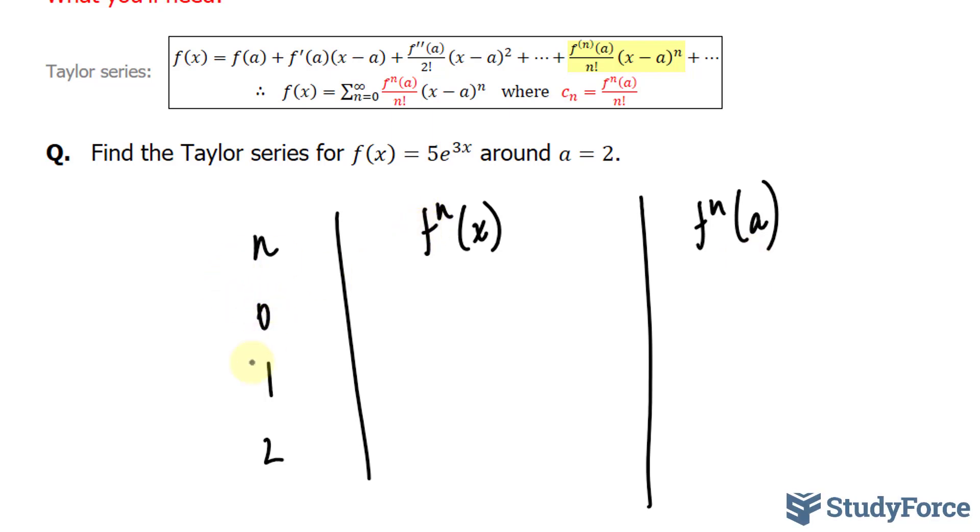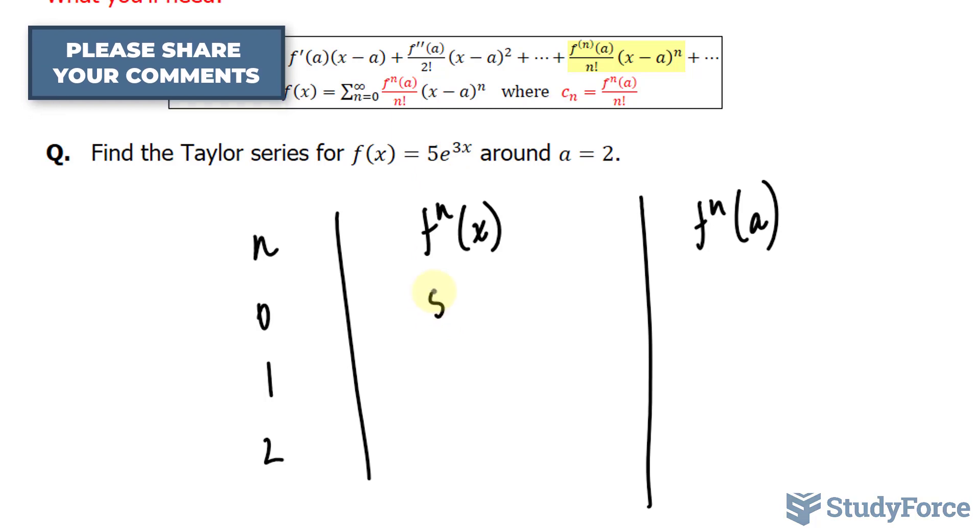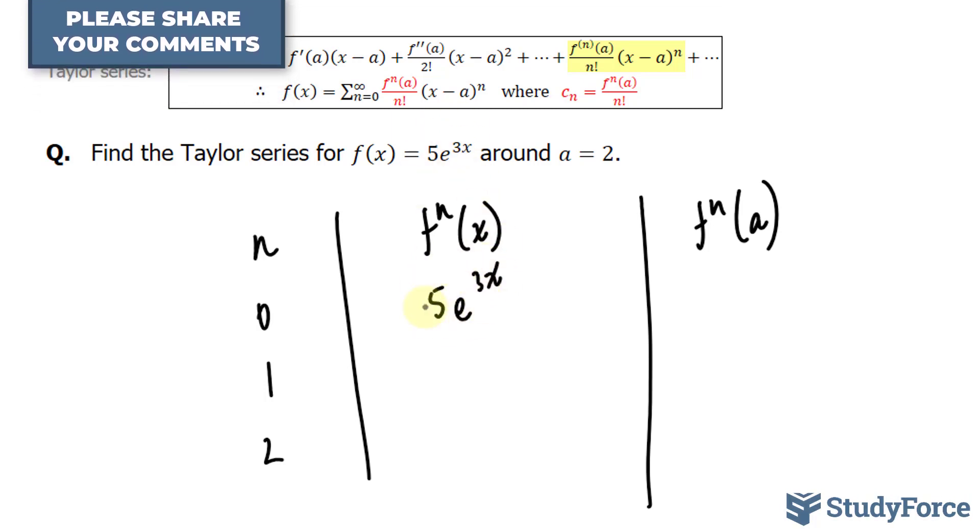The function when n = 0, meaning we're not deriving it, looks like this: 5e^(3x). Now taking the derivative of this function, we end up with 5e^(3x), and we derive 3x, which is 3.